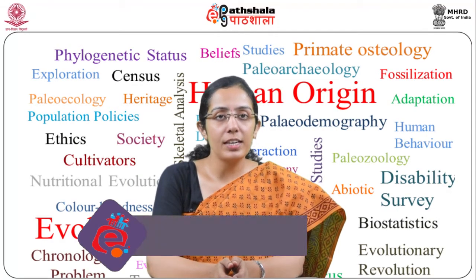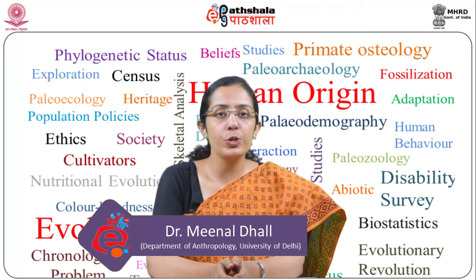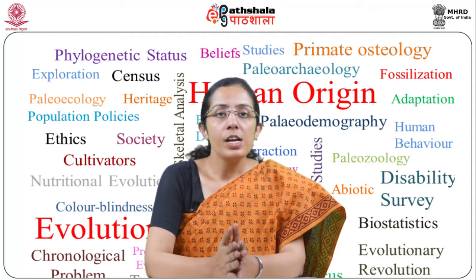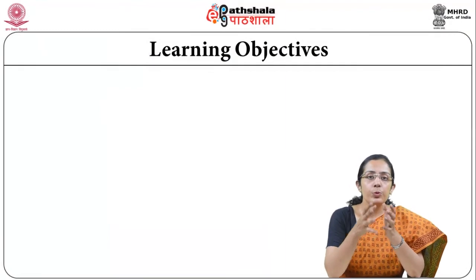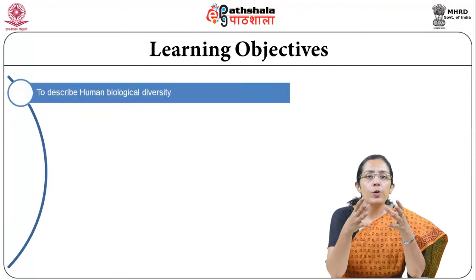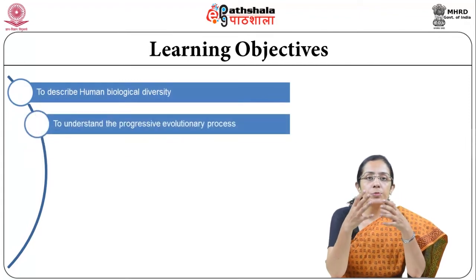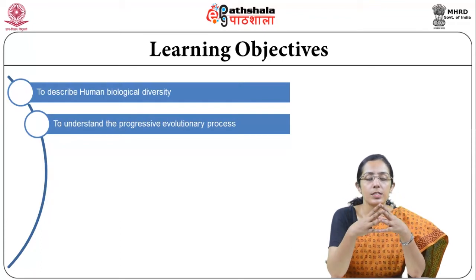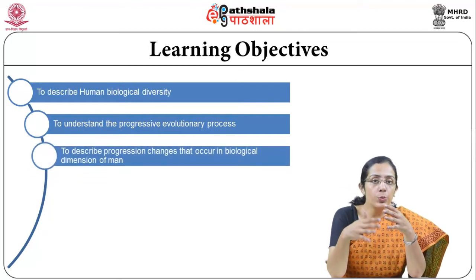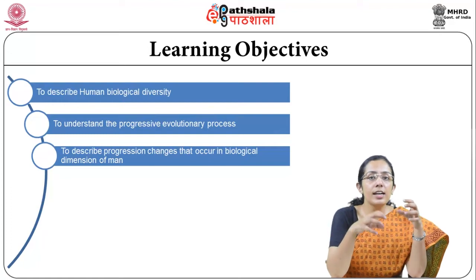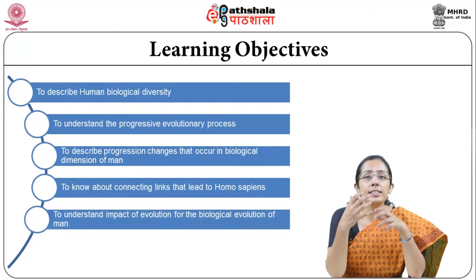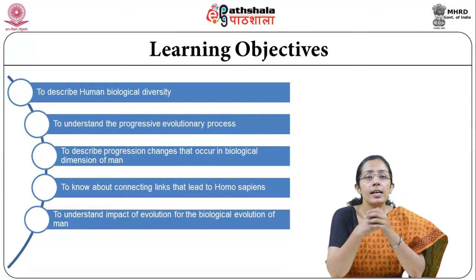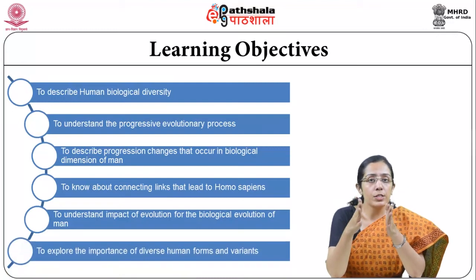Hello students, welcome to EPG Paatshala. I am Meenal Dhal from the Department of Anthropology, University of Delhi. Today we'll discuss the module 'Human Biological Diversity: A Brief History' from the paper Human Origin and Evolution. The objective of this module is to understand the progressive evolutionary process, describe the progression changes in the biological dimension of man, know about the connecting links leading to Homo sapiens sapiens, and understand the impact of evolution on man.